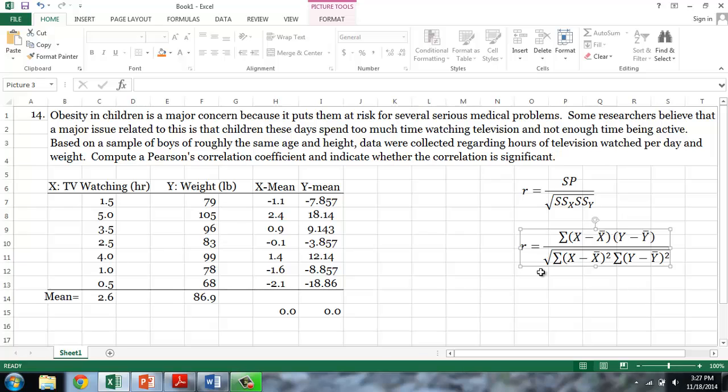In order to calculate the numerator and denominator, I will need to determine the product of the deviations as well as square each of the deviations for x and y. So first I'll create a column for the sum of the products. And this is equal to the deviation score for x times the deviation score for y.